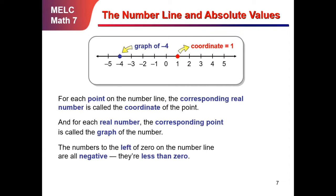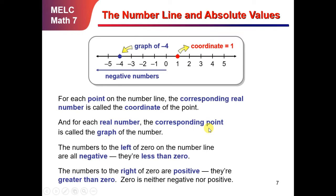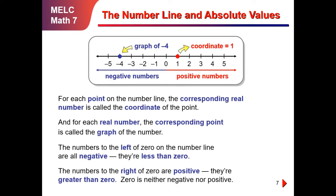The numbers to the left of 0 on the number line are all negatives. The numbers to the right of 0 are positive — they're greater than 0. Zero is neither negative nor positive; it is a neutral number. Negative 1 has the minus sign beside the number in order for it to be known as a negative number, while positive numbers are just the numbers themselves.